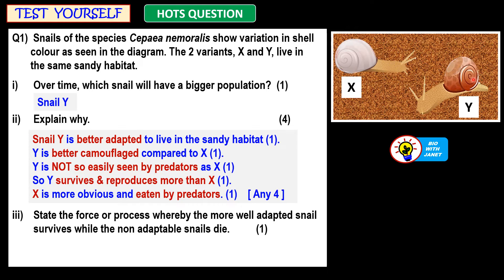What about X? X is more obvious — it shows greater contrast to its surroundings because of its white shell, and so it is more easily seen and eaten by predators. So it will die and its population will not increase so much.